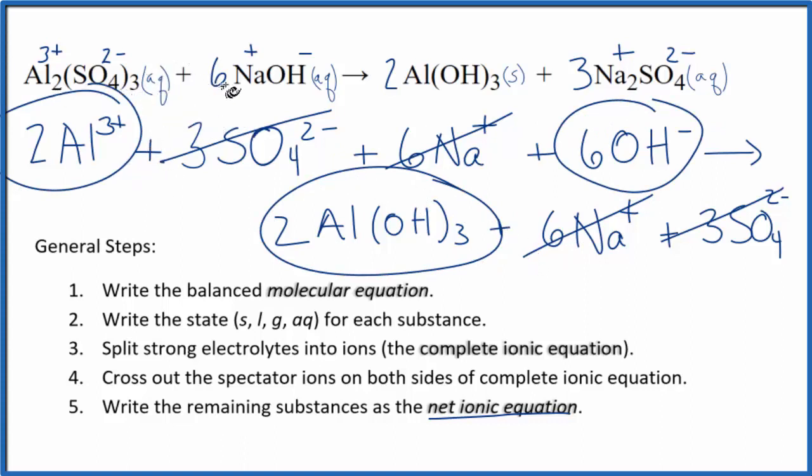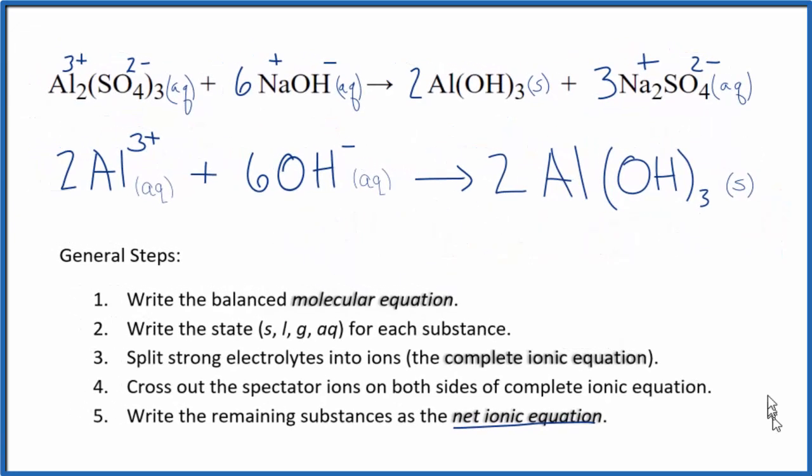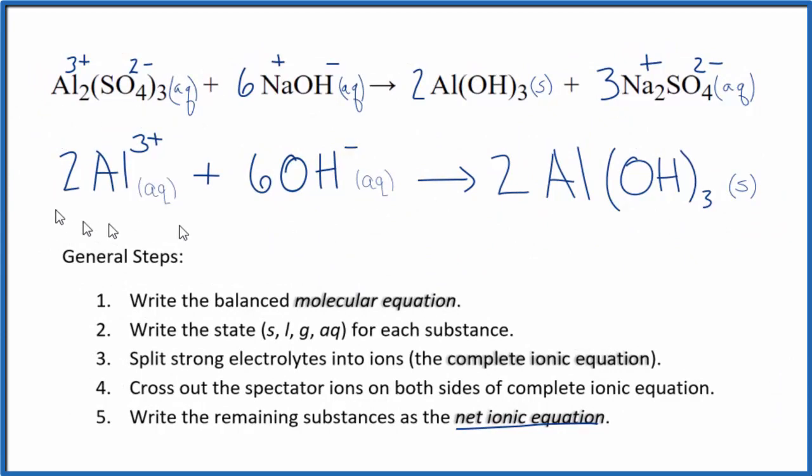And this is the net ionic equation for Al2(SO4)3 plus NaOH, aluminum sulfate plus sodium hydroxide. And this is Dr. B, thanks for watching.